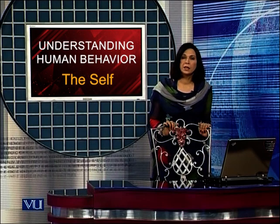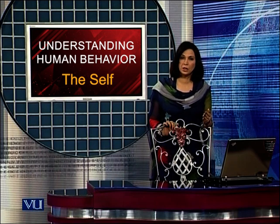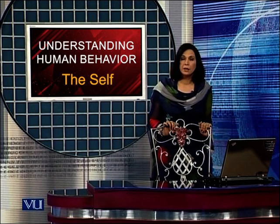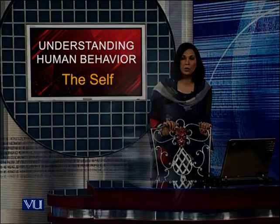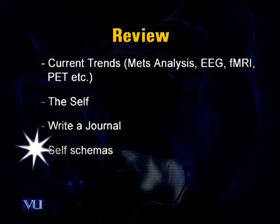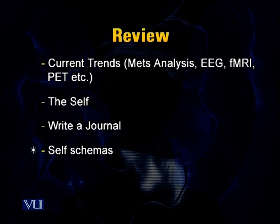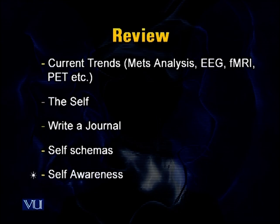In the last lecture, we talked about self that has two parts. One is the active agent — when we say 'I,' we are talking about the active agent and we are the subject of awareness. When we talk about 'me,' we are the object of awareness. Self-schemas are elements of self-concept — what we hold about ourselves. We also discussed two aspects of self as subject of awareness: personal/private self-awareness and public self-awareness.